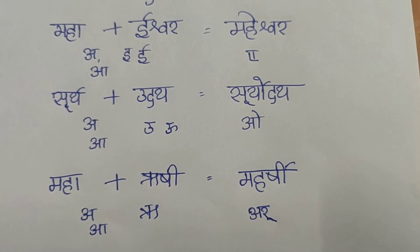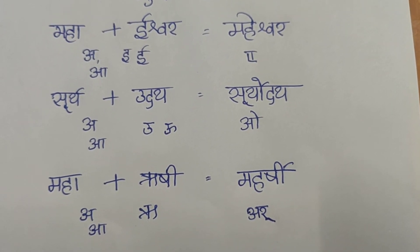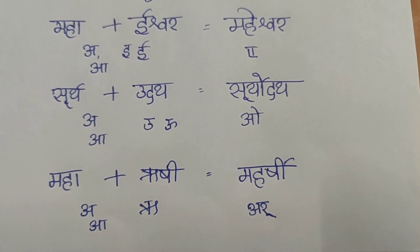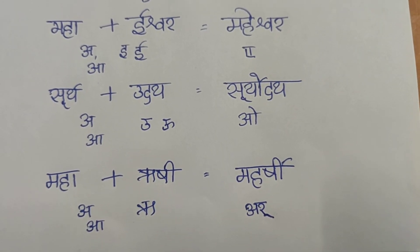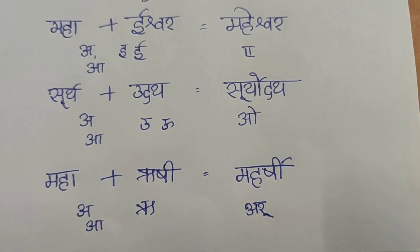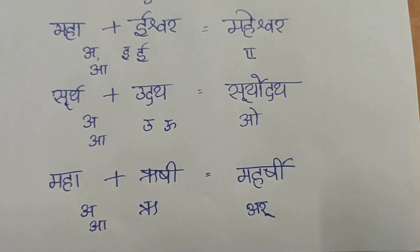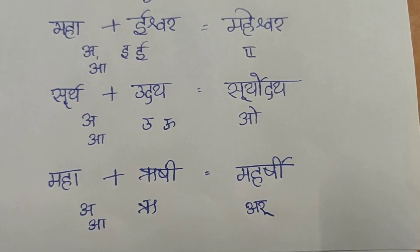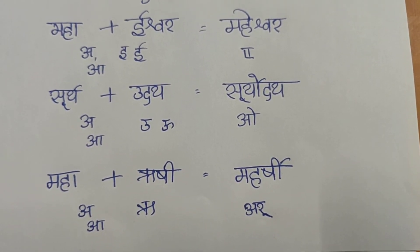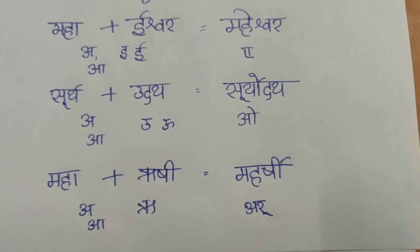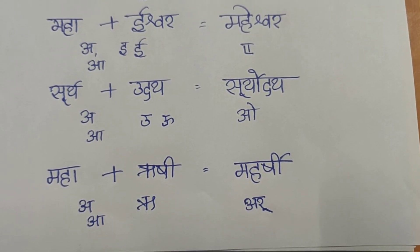Second variation: Surya plus Udaya. Here, the first word — Purvapada — ends with A, and the second word — Uttarapada — starts with U. A plus U becomes O. That's why the result is Suryodaya.